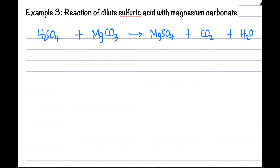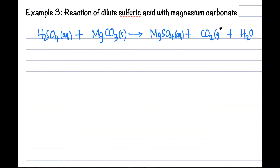Let's put in the state symbols. Dilute sulfuric acid is (aq). Magnesium carbonate is an insoluble salt, so it is (s). All sulfates are soluble except barium sulfate and lead sulfate, so magnesium sulfate is (aq). Carbon dioxide is a gas, and water is a liquid.